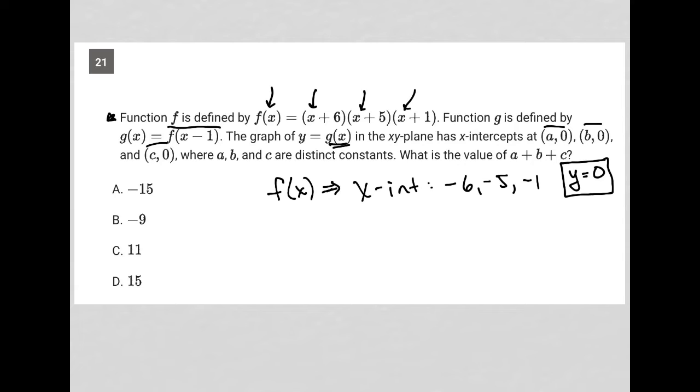I know that's where my x-intercepts are. Now let me just erase so we can be really clear. I'm told that g(x) equals f(x-1). Well, what does that do? f(x-1) shifts the f(x) graph to the right 1 unit.